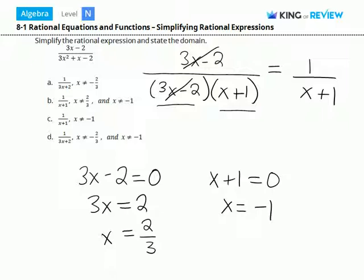So if x were either 2 thirds or negative 1, it would make our denominator 0, which we do not want. Letter B is correct.